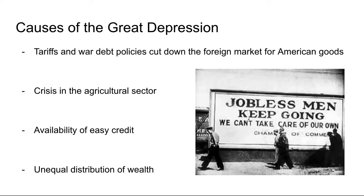So that's the overview: a long period where everybody is more or less financially ruined and struggling to get by day-to-day. The causes can't be boiled down to one thing — it's actually a combination of things. You're talking about tariffs and war debt policies that shut the door to foreign markets for American goods, a gigantic crisis in the agricultural sector, overwhelmingly easy credit available to just about everybody, and ultimately a gigantic unequal distribution of wealth. Combined, those are the causes of the Depression — it's not just the stock market crashing in 1929. It's a lot more complex.